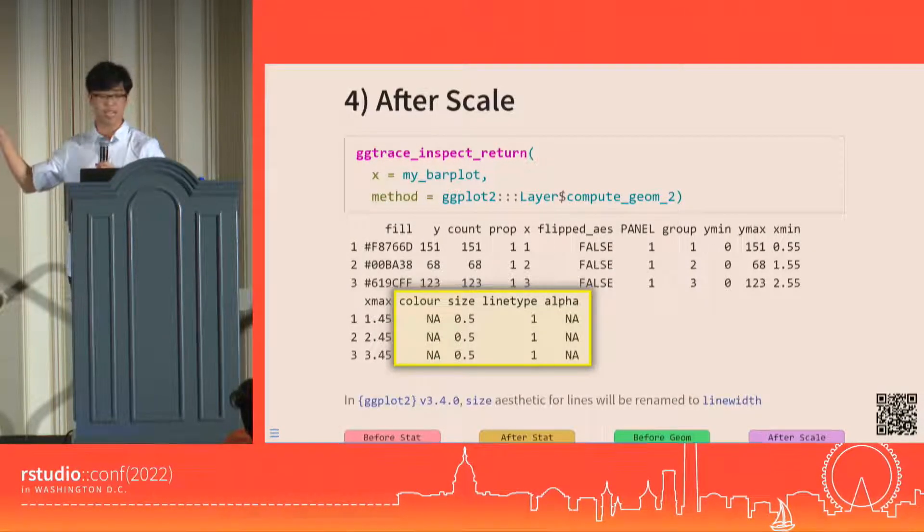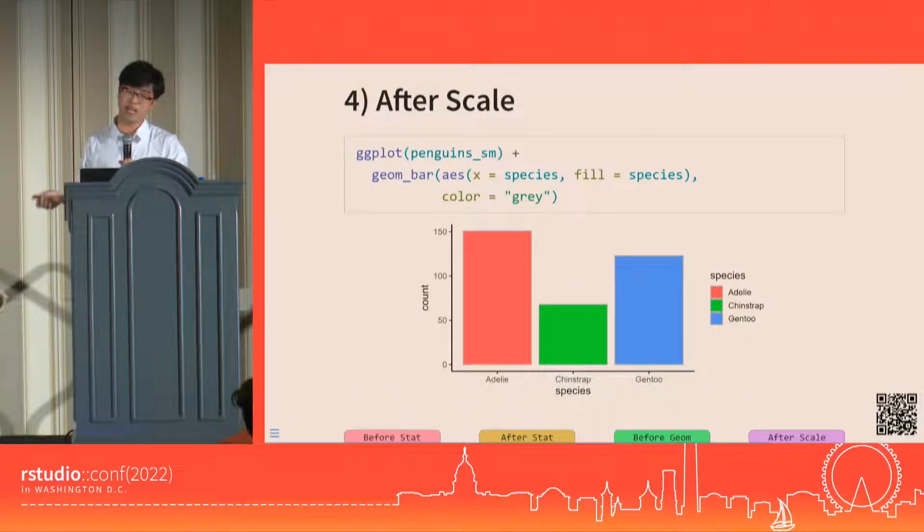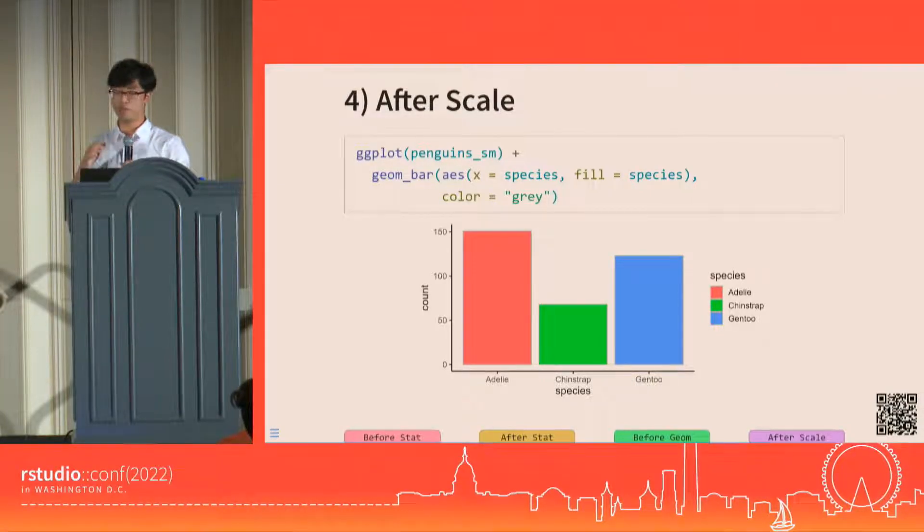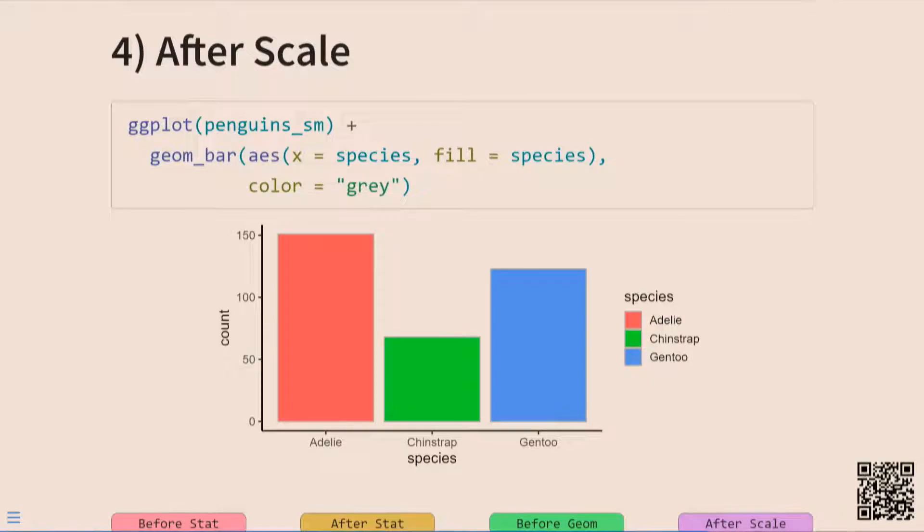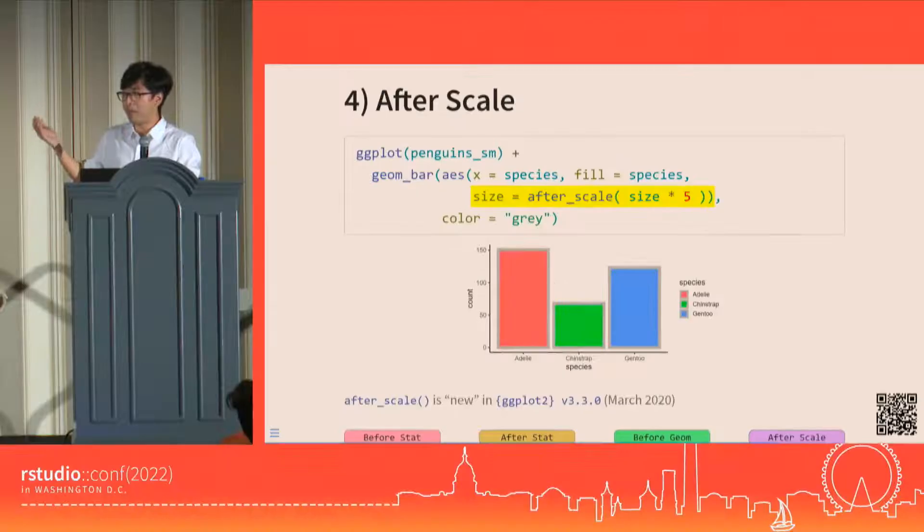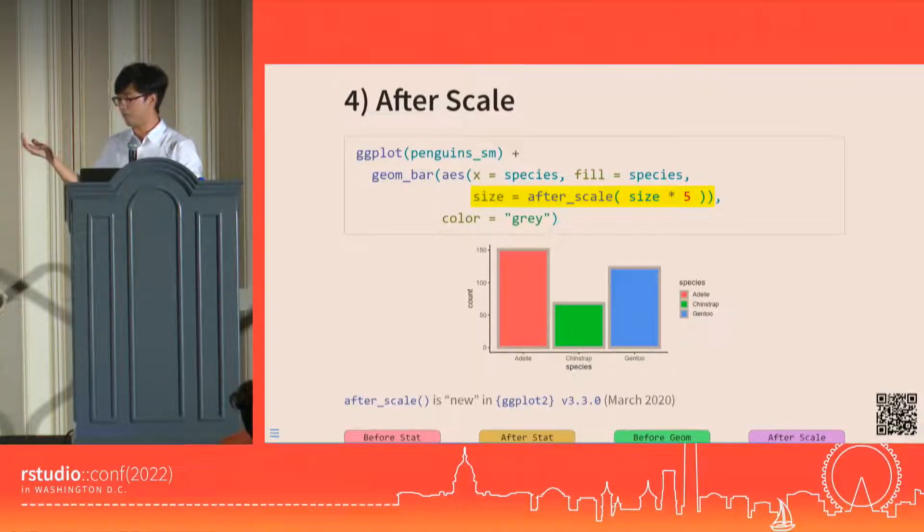For example, we have the size column by this point representing the thickness of the borders around the bars. It's actually kind of hard to tell the default value, it's small. If we wanted to make it five times thicker than it was originally going to be, you can kind of just do that on the fly. Grab the size column when it exists in the after scale data, multiply it by five, and map it or assign it back to the size aesthetic. Aesthetic mappings are kind of like scheduling a mutate call on your data for later.